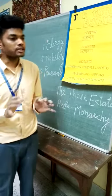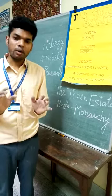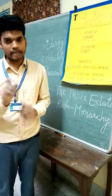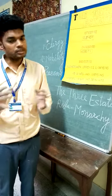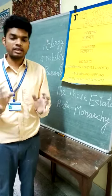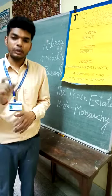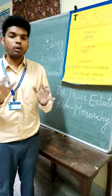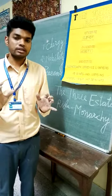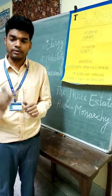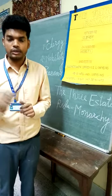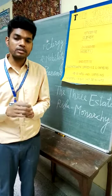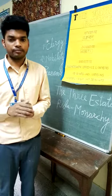So my dear students, today we studied about the three states in the French society, which consisted of clergy, nobility, and peasants. We also learnt the ruling system in France during the 18th century — that was Monarchy.